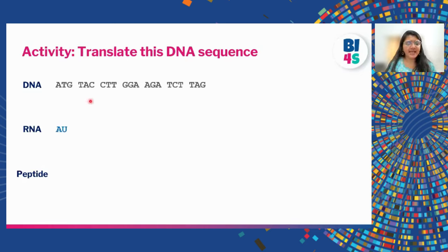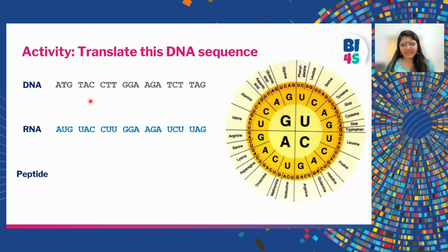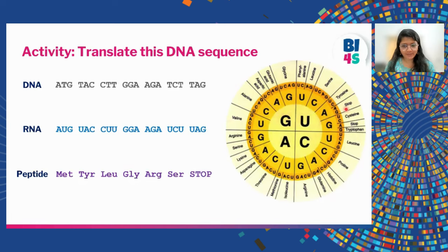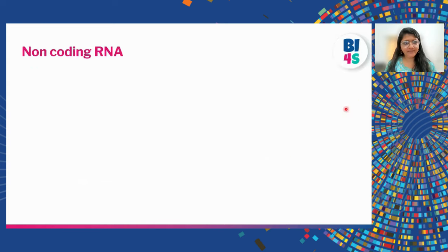The RNA is formed by replacing every T with U — that is the messenger RNA formed by transcription. To make the protein we use the codon chart: AUG makes methionine, UAC makes tyrosine, CUU makes leucine, GGG makes glycine, AGA is arginine, UCU is serine, and UAG is a stop codon — meaning the ribosome knows to stop making the protein there. This is how a protein is made from the entire RNA sequence.